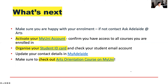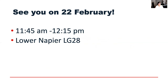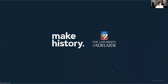So what's next? Make sure that you're happy with your enrollment — if not, contact us as soon as possible. Activate your MyUni account, organize your student ID card if you haven't already, and get access to your student email account. Also check out the arts orientation course on MyUni. That's all I have time for — see you on the 22nd of February from 11:45 at Lower Napier LG28. I'm very much looking forward to seeing you there — you can ask all sorts of questions. Thank you. Bye for now.